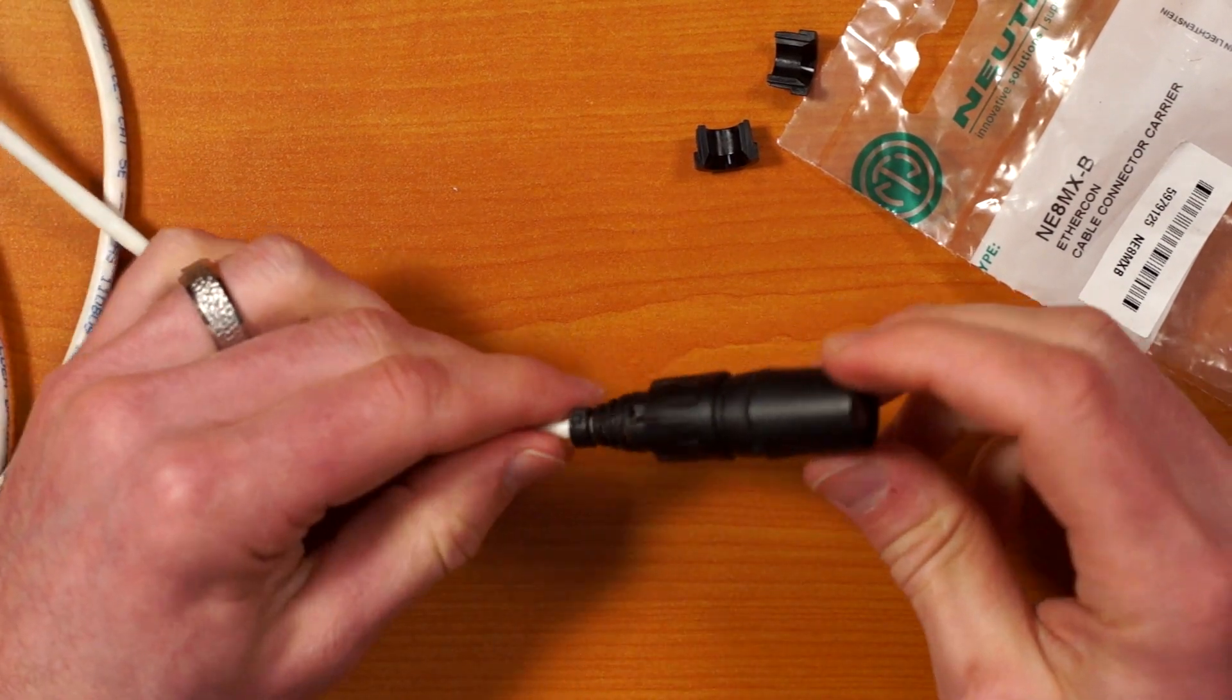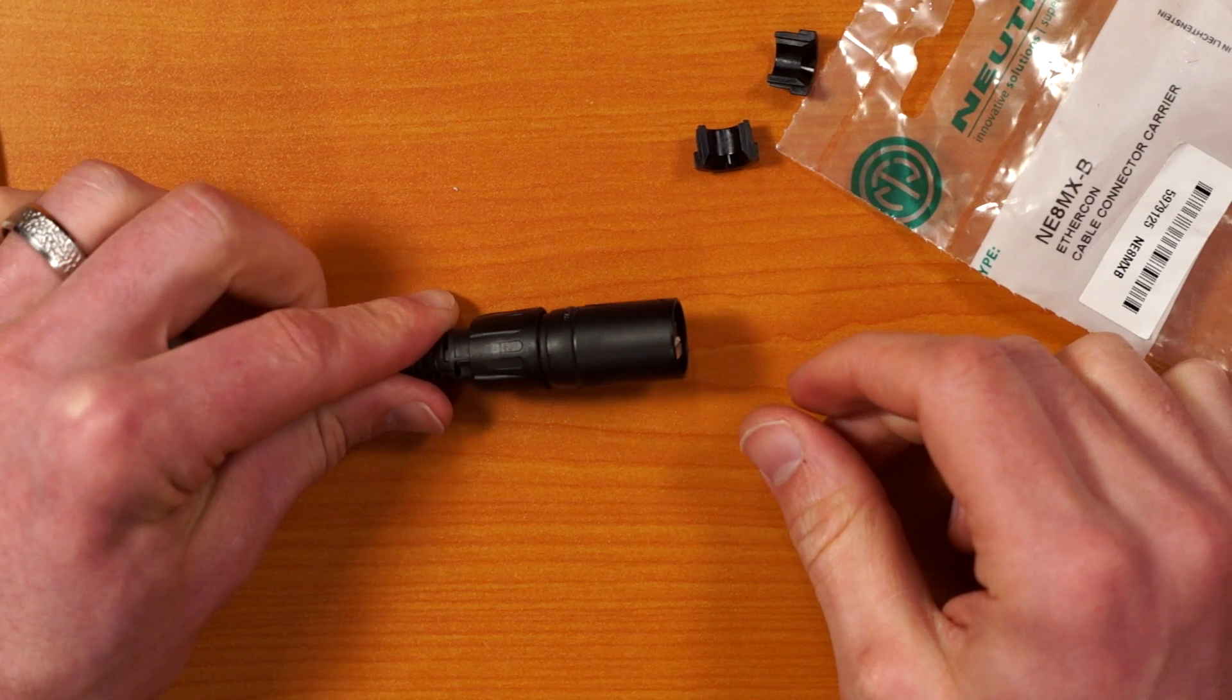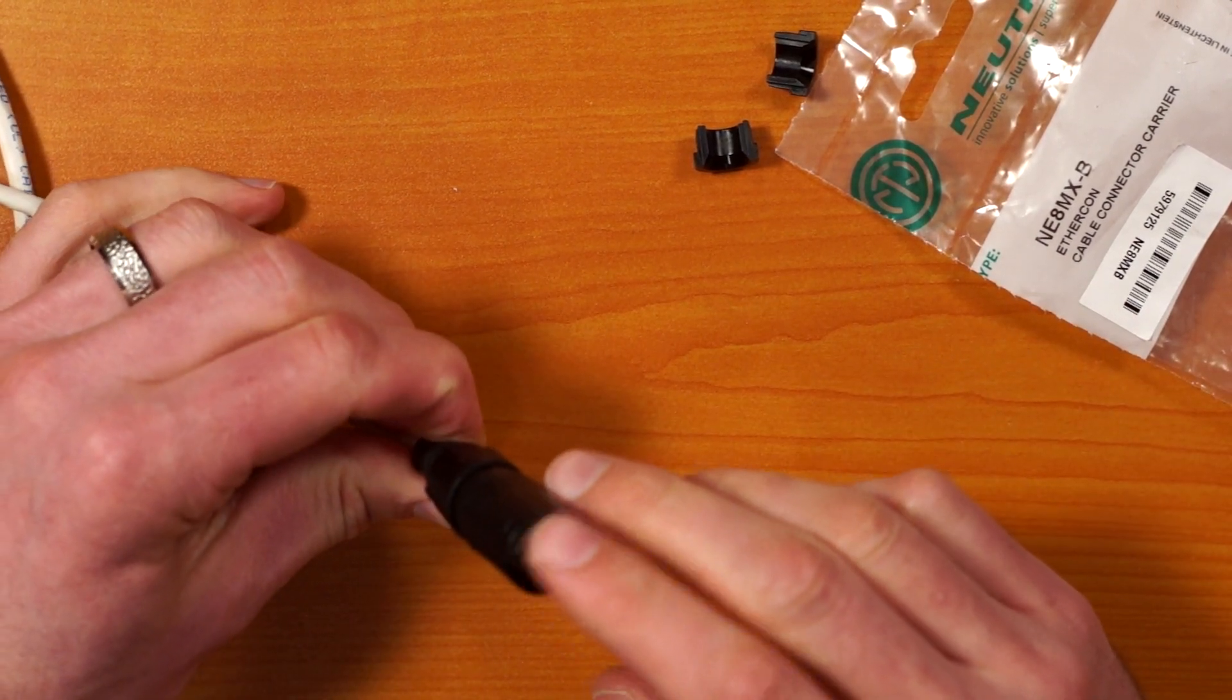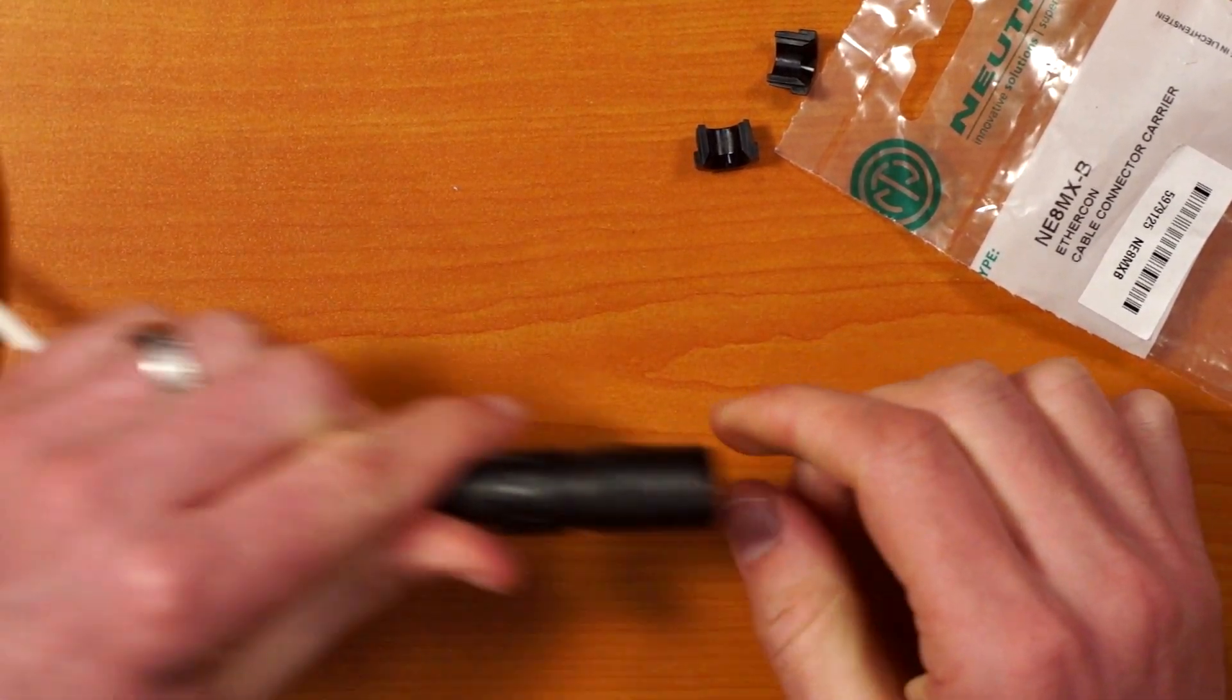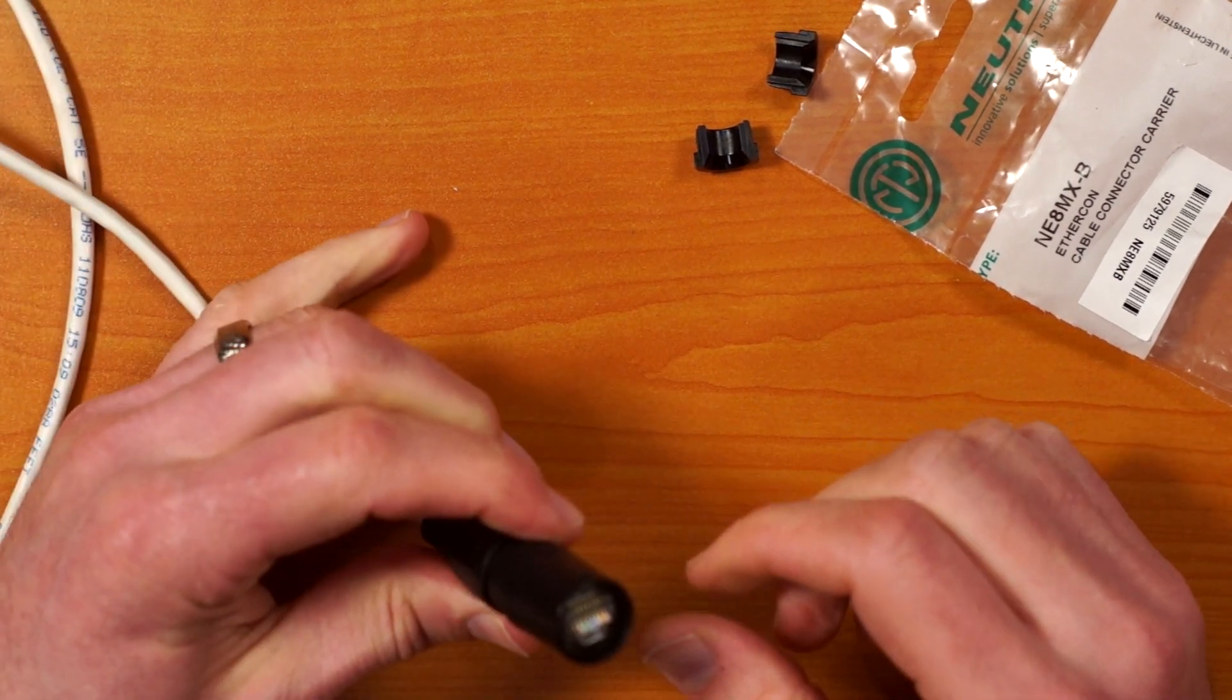Now what you'll want to do is actually try this on something that has an EtherCon female connector and once in a while it doesn't want to sit in exactly right. So what I recommend in that case is just loosen the housing a bit, click it into your device and then re-tighten it and that'll make sure it's in there nice and straight.